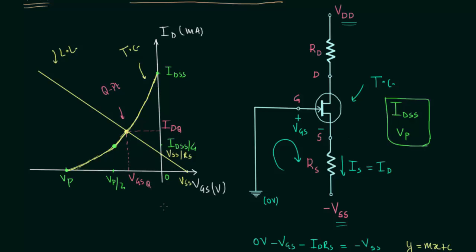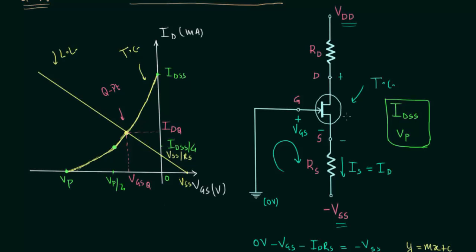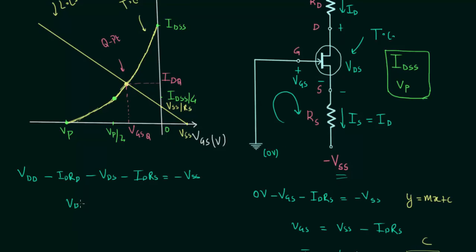The remaining quantity is the output voltage VDS. To find VDS we apply Kirchhoff's voltage law in the output loop, starting from VDD and ending at minus VSS. This gives: VDD minus ID·RD minus VDS minus ID·RS equals minus VSS. Rearranging, VDS equals VDD plus VSS minus ID(RD + RS).